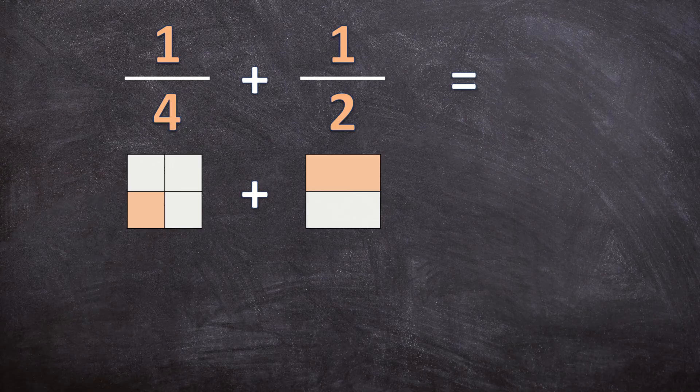The shapes aren't divided into exactly the same number of equal pieces — one is divided into four equal pieces and the other into two equal pieces. So we're going to take the second shape and also divide it into four equal pieces.